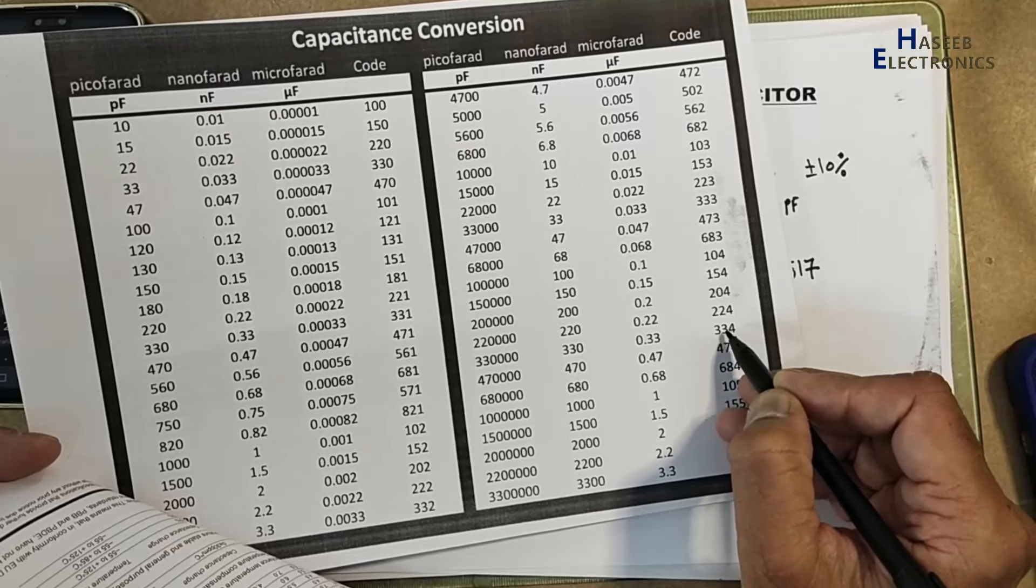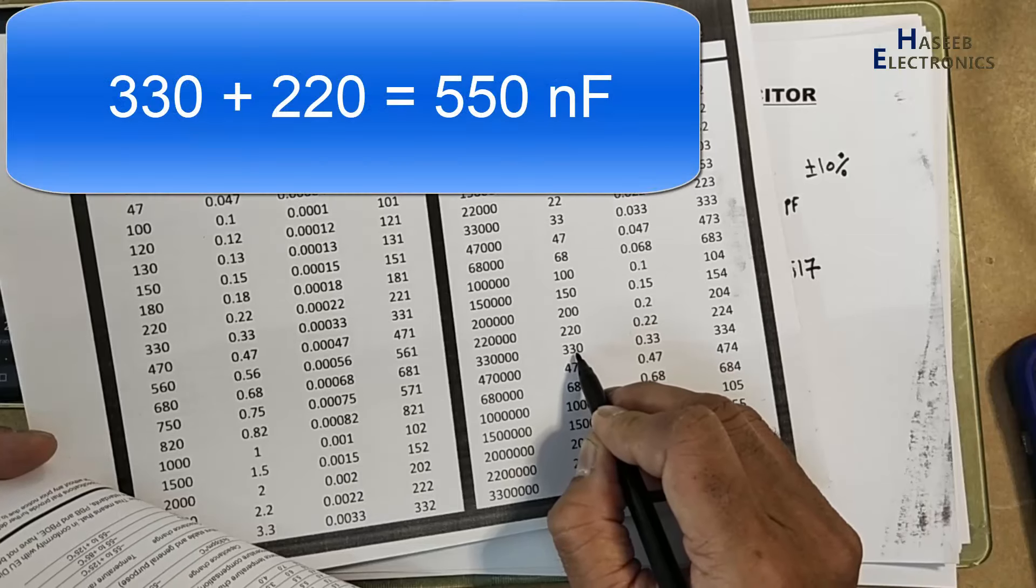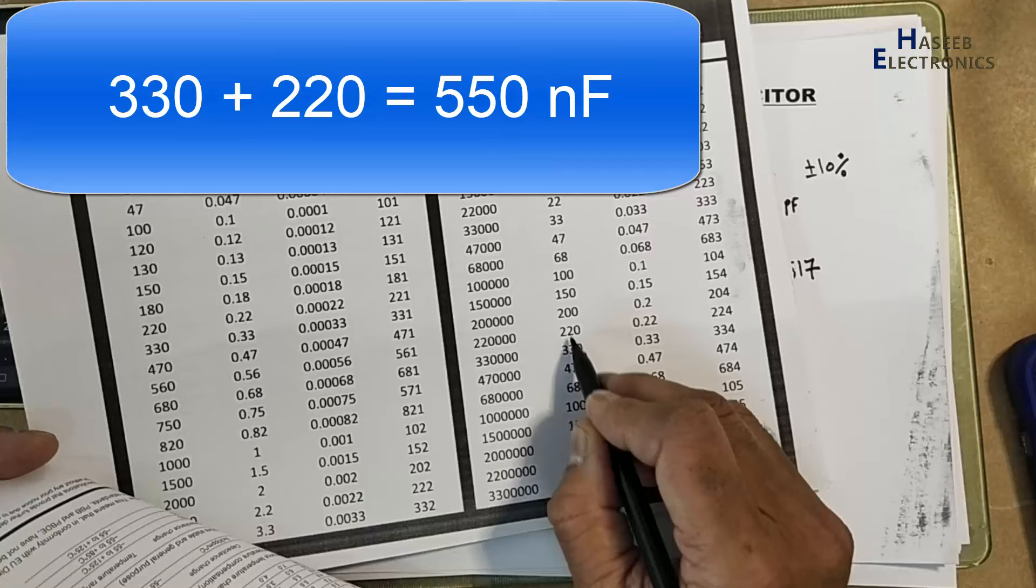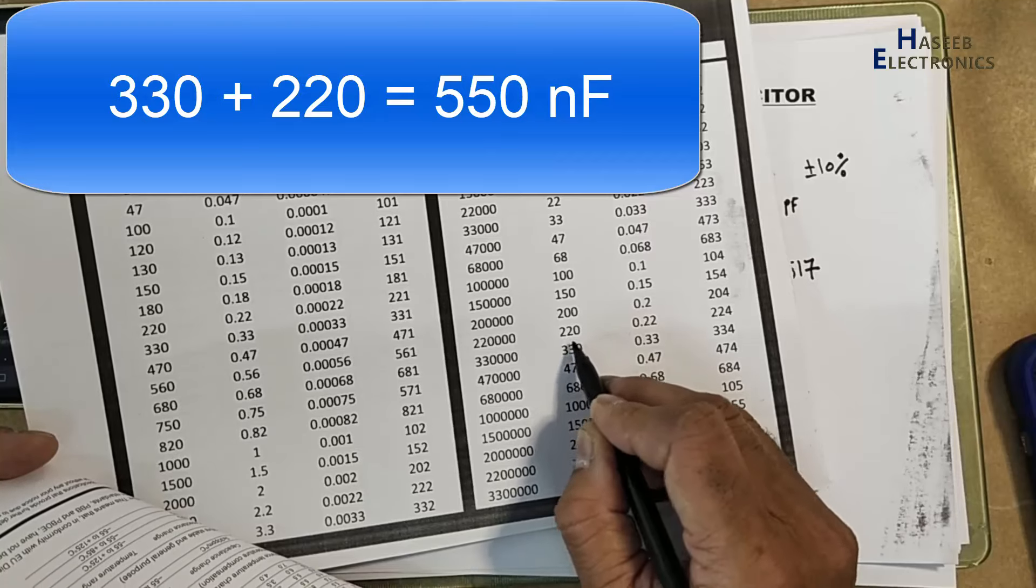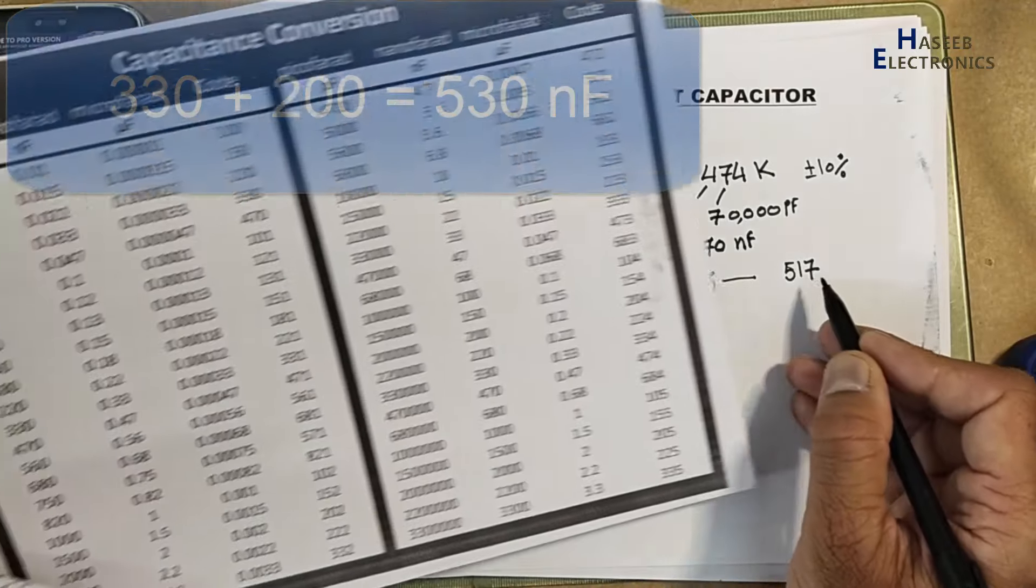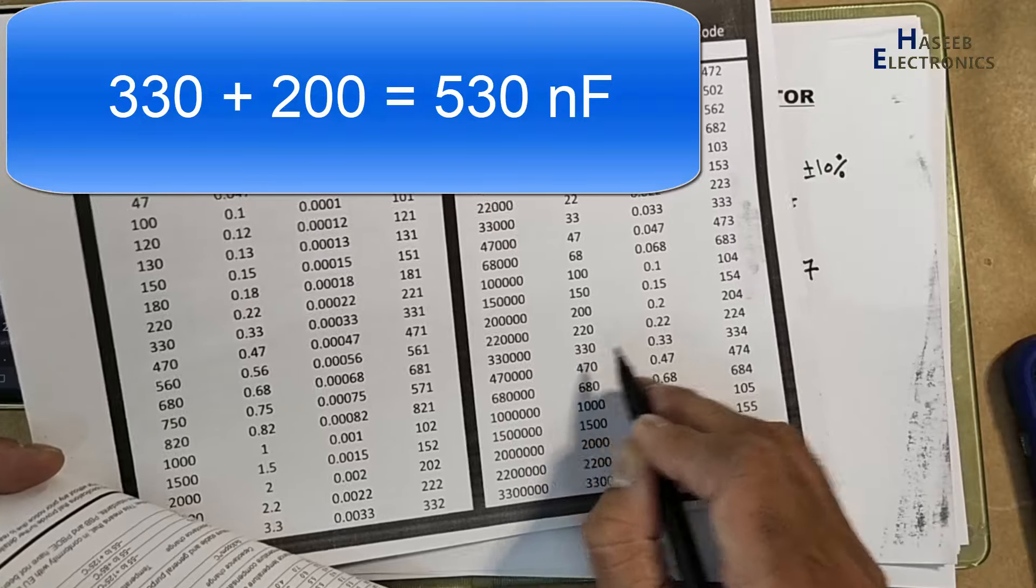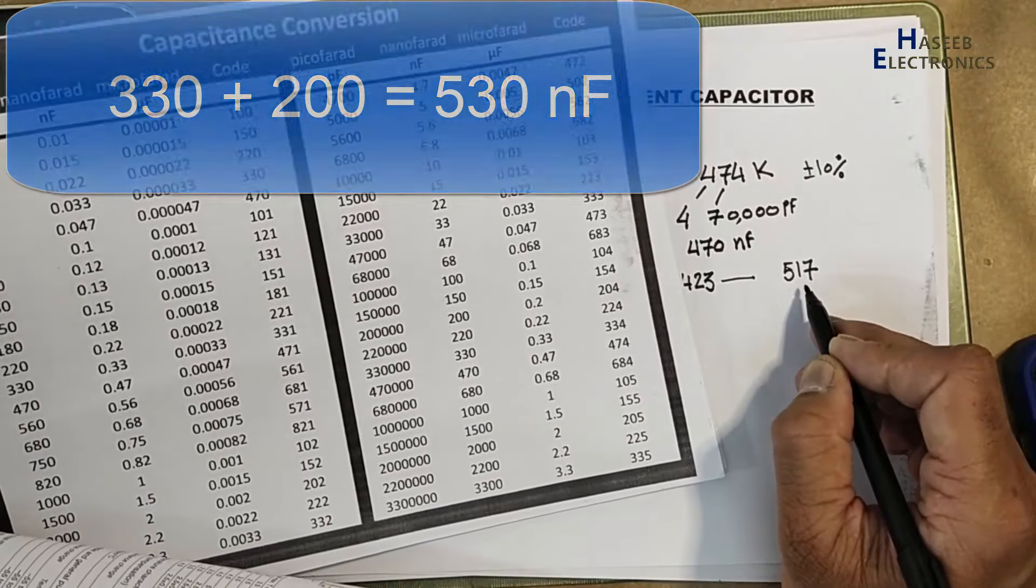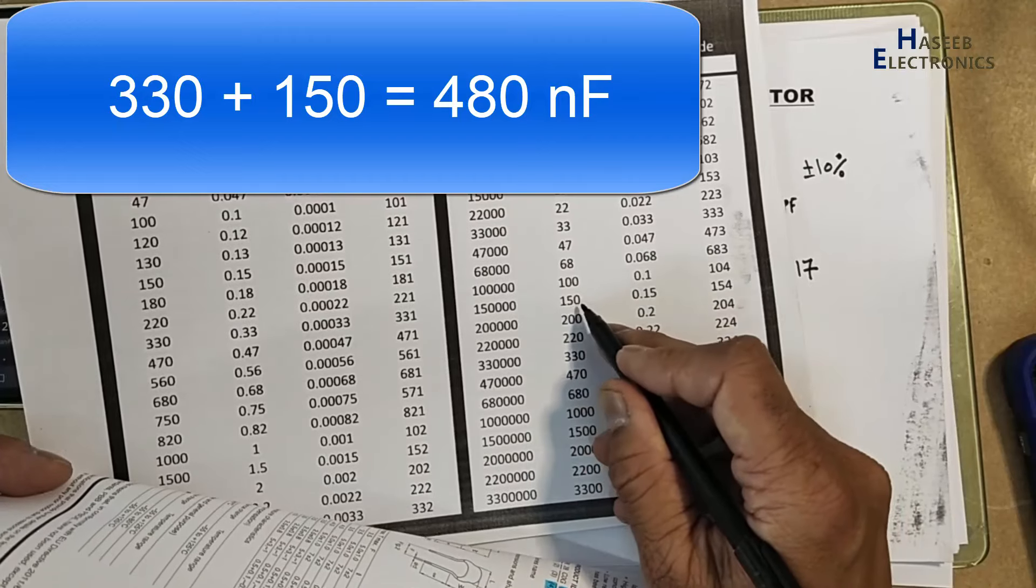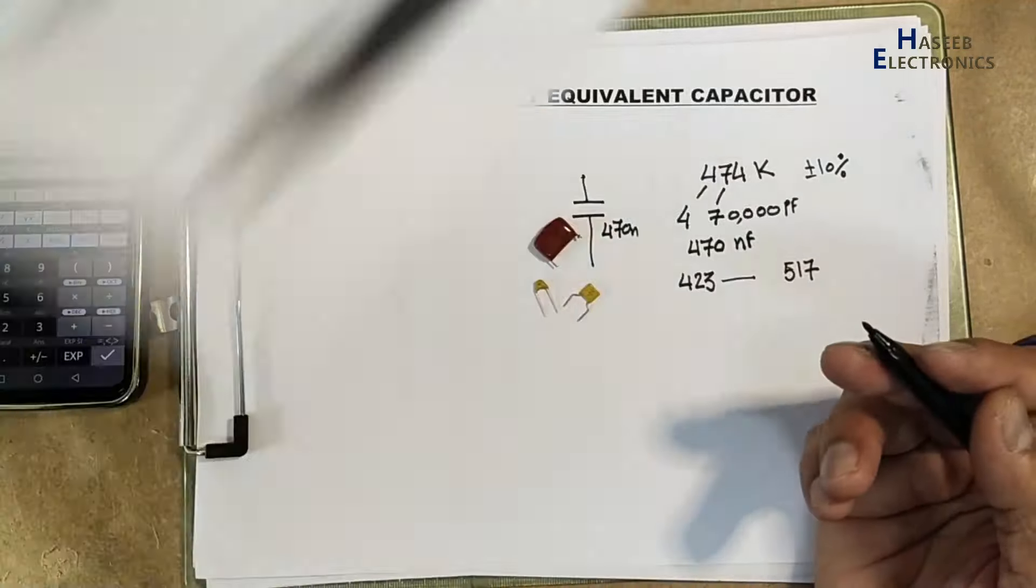Now check its upper value 334, that's 330 nano. If we add 330 with 220, these two capacitors in parallel, it will be 550. 550 will be above this rating. 330 with 200, that will be 530. That will also be more than this. 330 with 150, that's 480. Two capacitors in parallel.